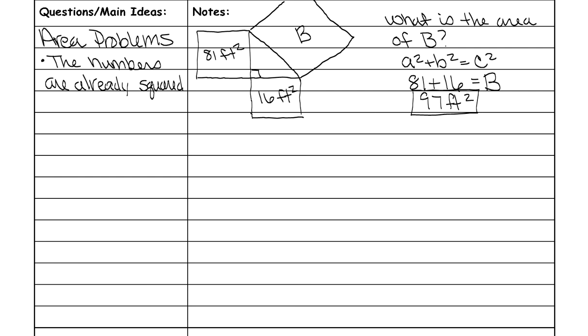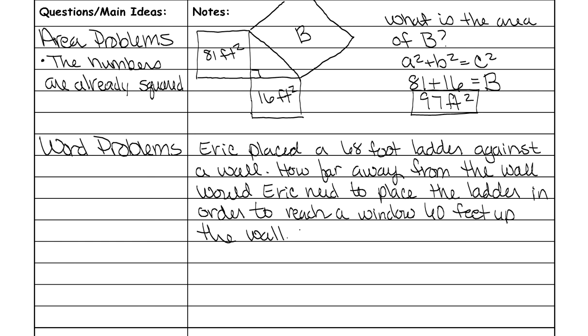Next we're going to cover a word problem. That'll be the last thing we do. So here is an example word problem. This says Eric placed a 68 foot ladder against a wall. How far away from the wall would Eric need to place the ladder in order to reach a window 60 feet up the wall? The very first thing you want to do is draw a picture of the situation.